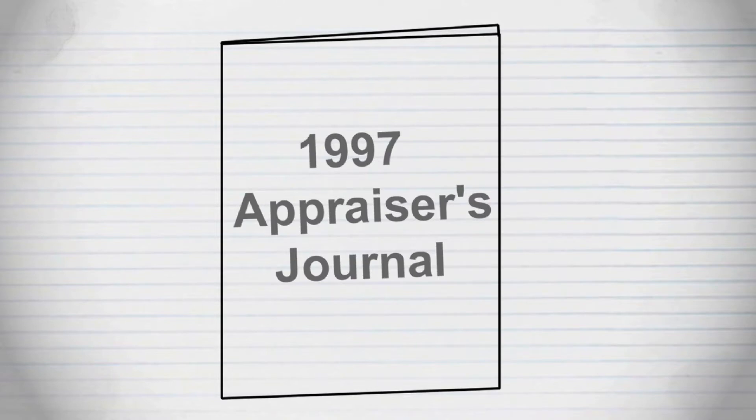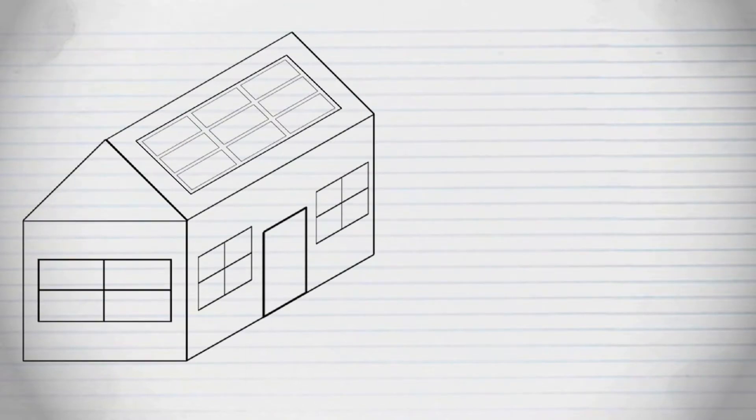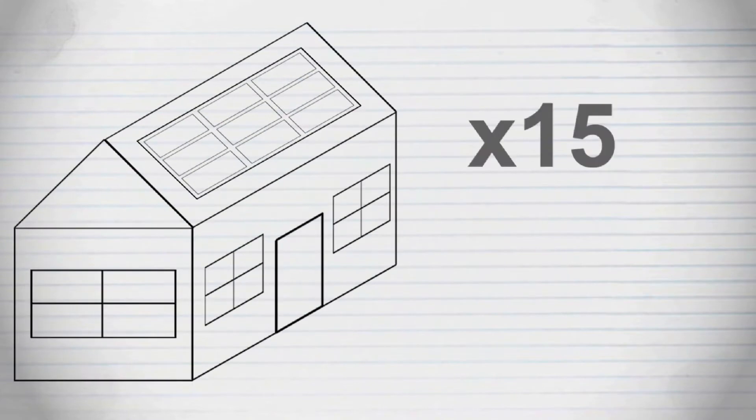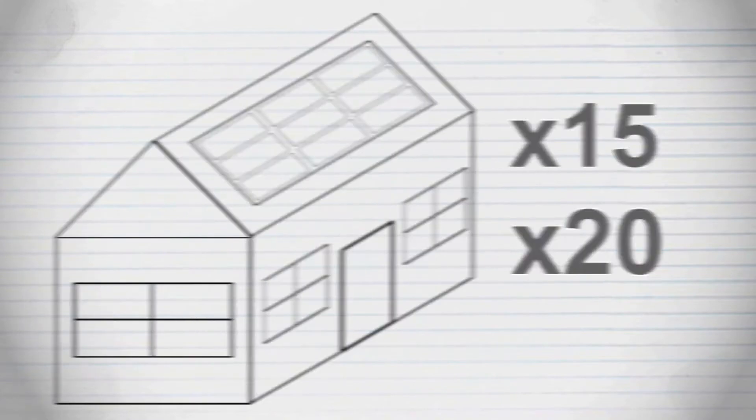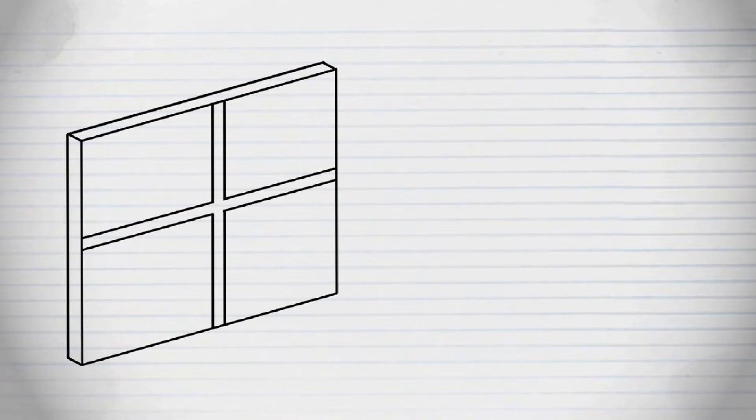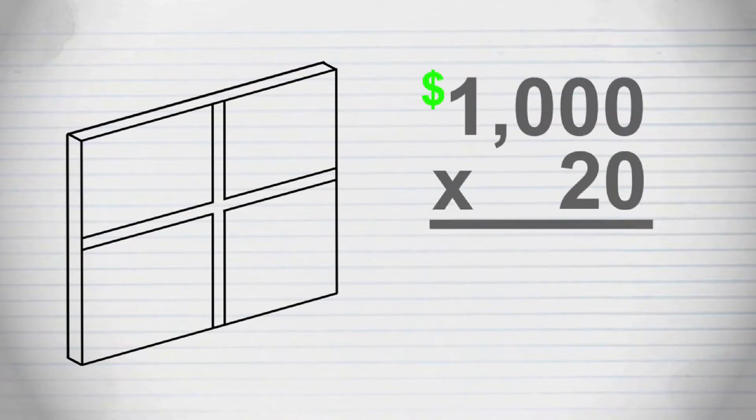It says that for improvements you make to your home for energy, every buck a year you save adds 15 to 20 times that to the value of your home. So if you got double pane windows and it saved you a thousand dollars a year in electricity, that adds twenty thousand dollars to your home.